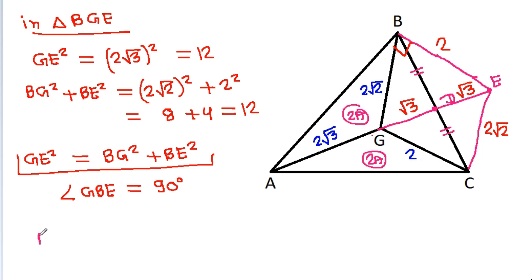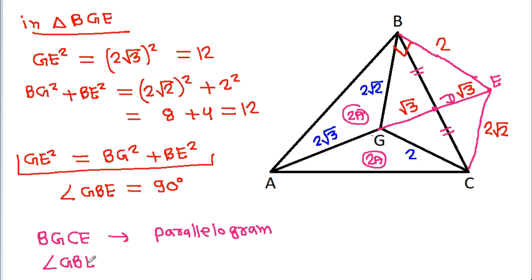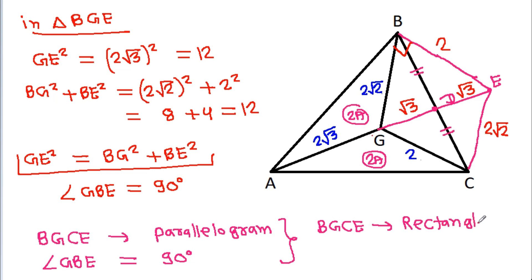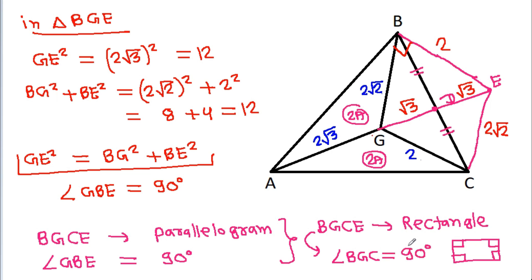Now we know that BGCE is a parallelogram, and angle GBE equals 90 degrees. That means BGCE is a rectangle. And in any rectangle, all angles are 90 degrees. So angle BGC is also 90 degrees.